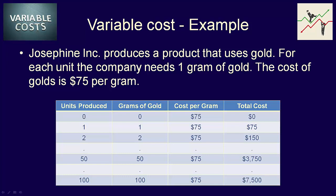You can see that as the level of activity goes up, the total variable costs increase too. We are looking at cost behavior — you can see how the cost of gold behaves as the level of activity, which in this case is the number of products, changes. It's clear that the cost of gold is a variable cost because it changes with the level of activity.